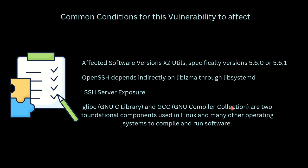Some common conditions for this vulnerability to take effect: the XZ Utils version on your Linux should be 5.6.0 or 5.6.1; your OpenSSH service should be directly or indirectly dependent on liblzma; your SSH server should be exposed to the public; and glibc and gcc should be present and configured in a specific way. If these conditions are not met — for example, if your SSH server is not exposed to the internet or your OpenSSH doesn't depend on liblzma — you don't need to worry.